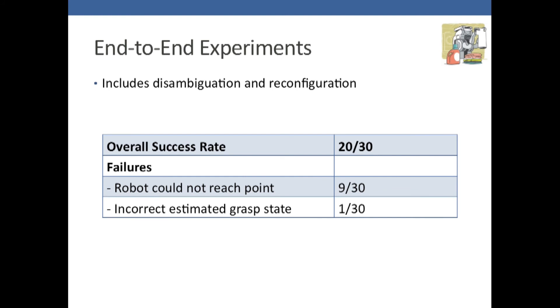The last experiment was a set of end-to-end experiments including disambiguation and reconfiguration. The overall success rate was 20 out of 30. We defined a success to be when it did everything correctly. Out of the ten failures, nine were when the robot could not reach a point, and only one was when the disambiguation procedure returned the wrong grasp state.